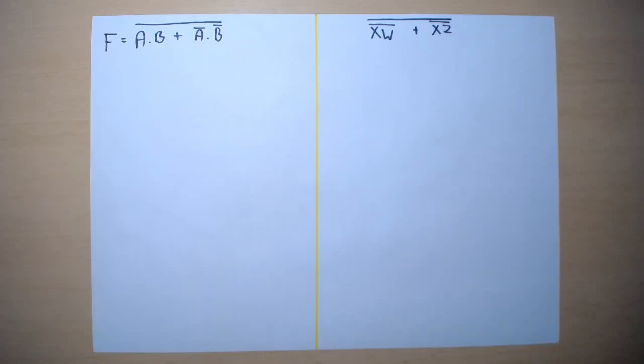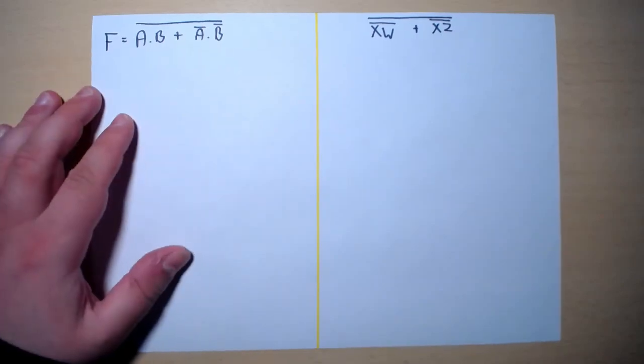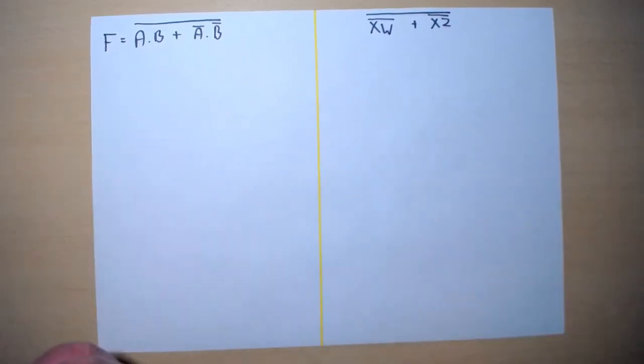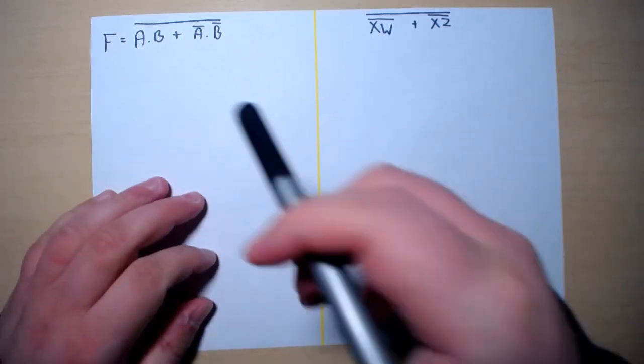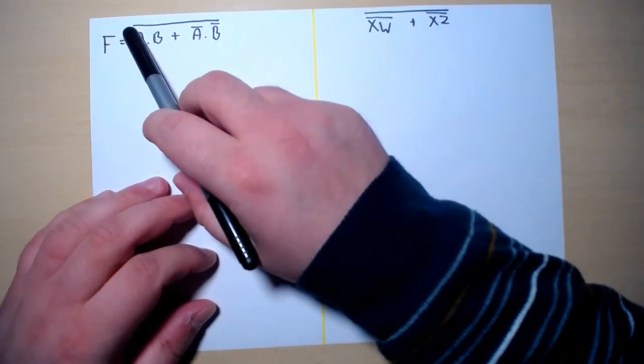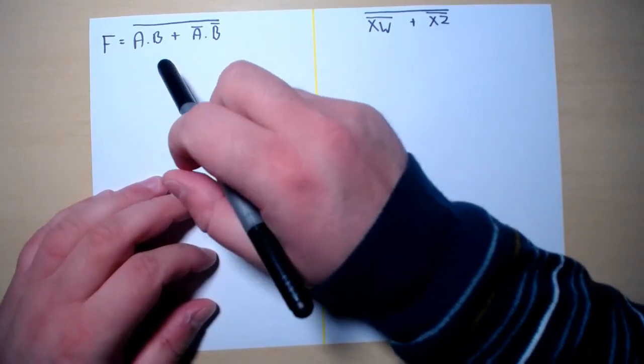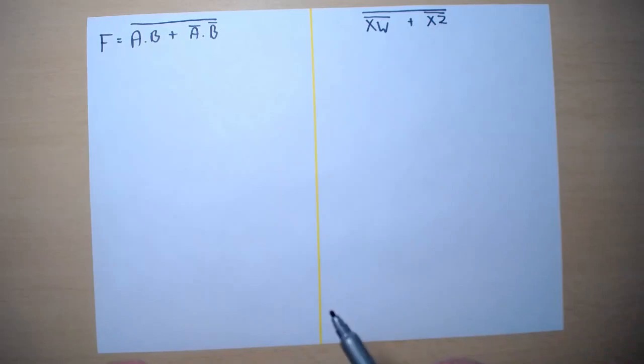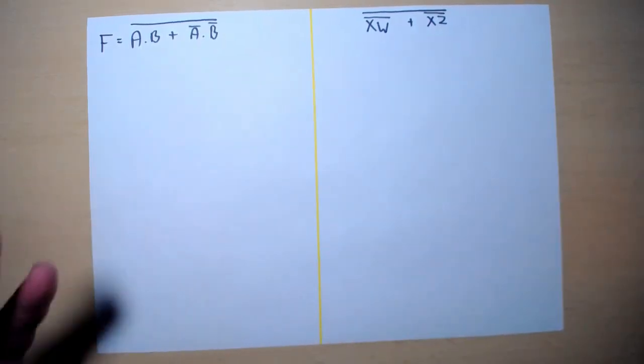In this video I am going to work out two Boolean algebra minimization examples that include the use of De Morgan's laws. Let's start from the first one. We have F equals A and B or A naught and B naught naught. When we have this type of naught which is across more than one term, we have to use De Morgan to split it in two and we will be able to work further.